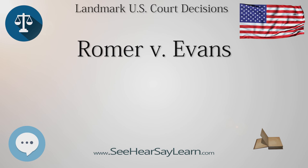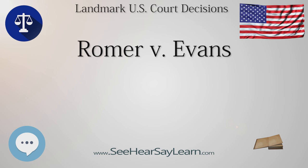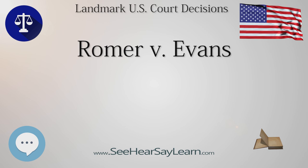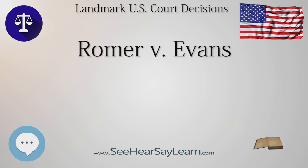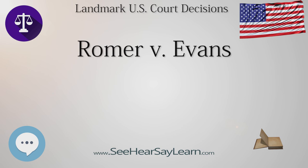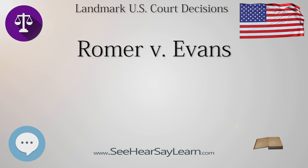Dissenting opinion. Justice Antonin Scalia wrote the dissent, joined by Chief Justice William H. Rehnquist and Justice Clarence Thomas. Scalia asserted that Amendment 2 did not deprive anyone of the protection of general laws and policies that prohibit arbitrary discrimination in governmental and private settings, which he said was confirmed by the Colorado Supreme Court and not disputed by Justice Kennedy's opinion. Scalia's dissent said Amendment 2 merely provided that homosexuals cannot as readily as others obtain preferential treatment under the laws. Regarding the Court's earlier decision in Bowers v. Hardwick, 1986, Scalia wrote: if it is rational to criminalize the conduct, surely it is rational to deny special favor and protection to those with a self-avowed tendency or desire to engage in the conduct.